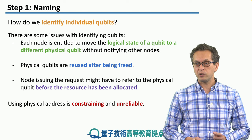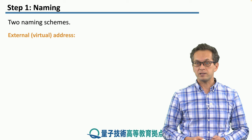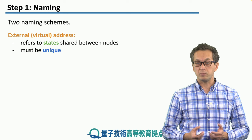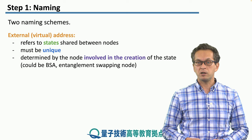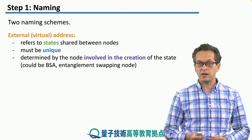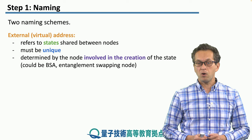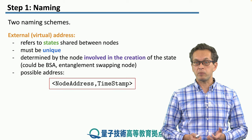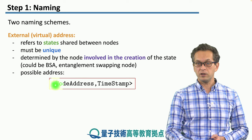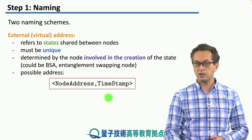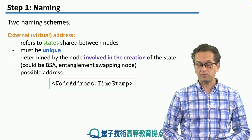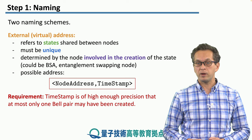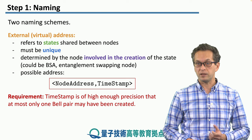In order to solve this problem, we're going to introduce two naming schemes. The first scheme is an external or virtual address. This scheme refers to the states shared between nodes. It must be unique, and it is determined by the node involved in the creation of the state. This could be done at the BSA — that's interfering two flying photons — or it could be done at the entanglement swapping node. A possible address might look something like this: first, the node address, followed by a timestamp. This timestamp identifies the time when the state was created. In order to ensure uniqueness, we have a requirement that the timestamp is of high enough precision that at most only one bell pair may have been created within that time window.